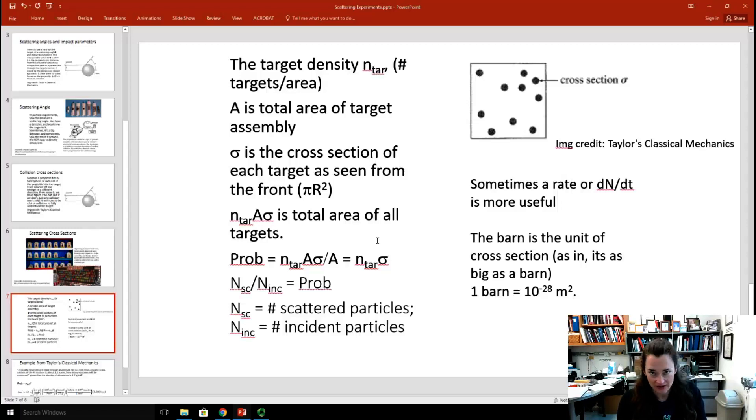The unit, by the way, that they use for cross sections, which is proportional to the likelihood of a scattering event, is a barn. This is the unit that they use for scattering events from small particles. If you think about it, the cross section or the radius of a nucleus would be about a femtometer or 10 to the minus 14 meters to 10 to the minus 15 meters.